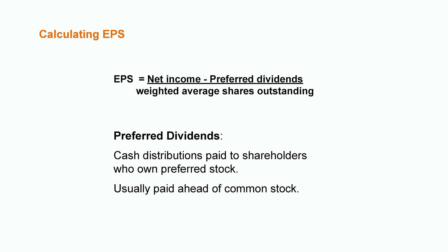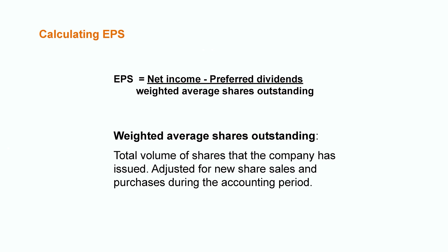Next we subtract out the preferred dividends, which are the cash distributions paid out to shareholders that own preferred stock. When companies issue preferred stock to investors it usually grants them special perks, such as priority access to dividend payments. Once we've removed these dividends from net income, the final step is to divide by the weighted average shares outstanding — the total volume of shares the company has issued, adjusted for new share sales and purchases throughout the accounting period.